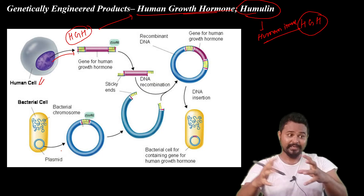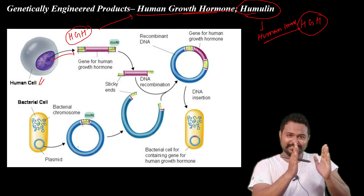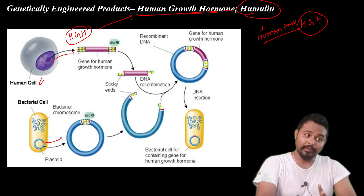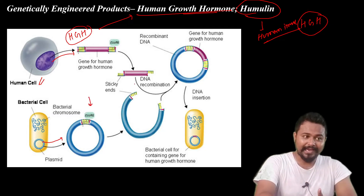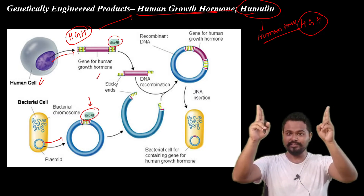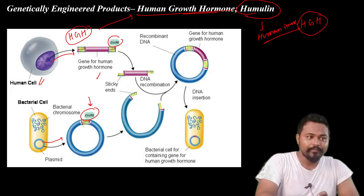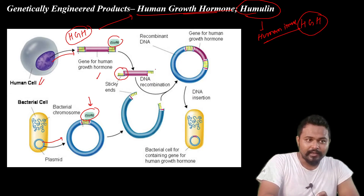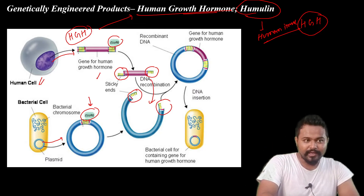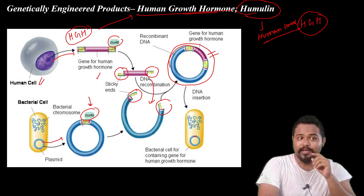You have bacterial cells and recombinant DNA. You have a plasmid. Using a restriction enzyme — EcoR1 — you cut both the plasmid and the gene of interest to create complementary sticky ends.